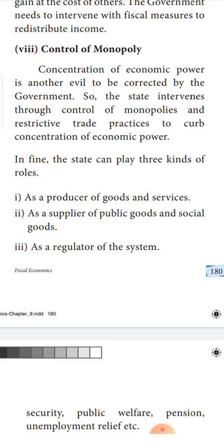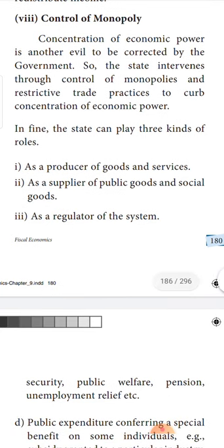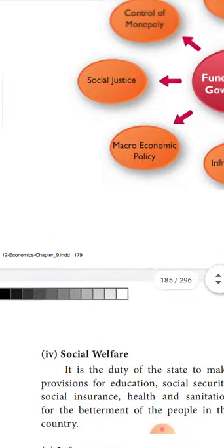How the government can curb the concentration of economic power: first, the government itself should produce certain goods and services so that private corporates will not suppress the poor people. Next is supply of public goods and services — the government also should take the work of supplying goods to needy people. That is why we have the civil supplies department, where the government distributes essentials to the people directly through the ration card or smart card. Finally, as a regulator of the system, the government should regulate the demand and supply conditions and see that prices do not increase, because when prices increase, inflation comes, and poor people get affected.